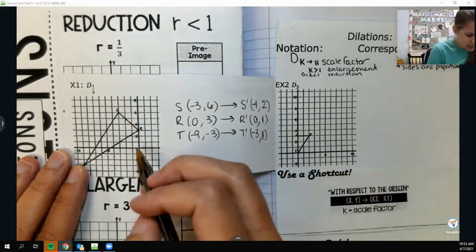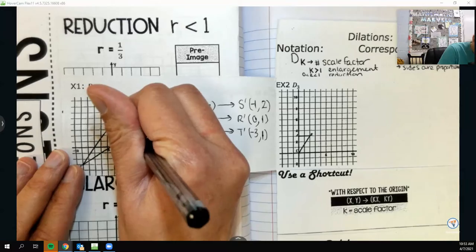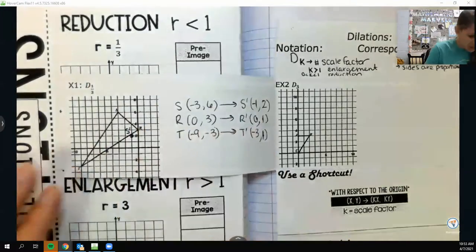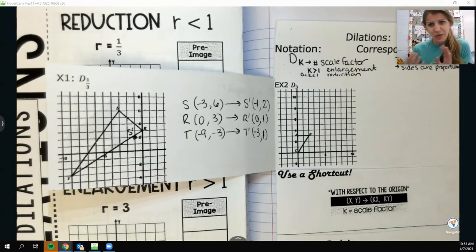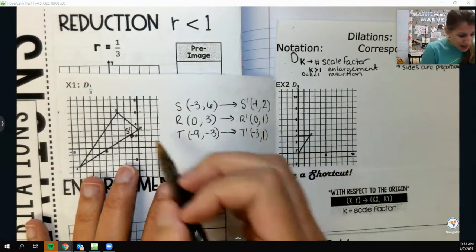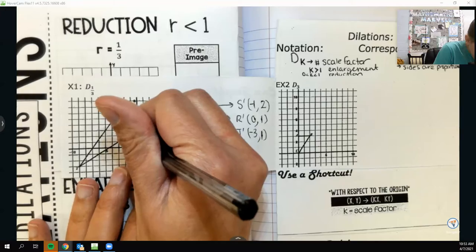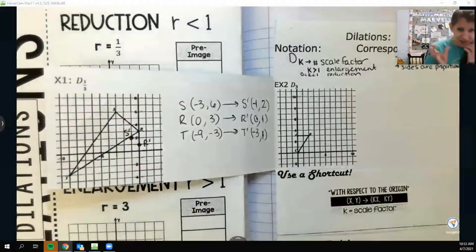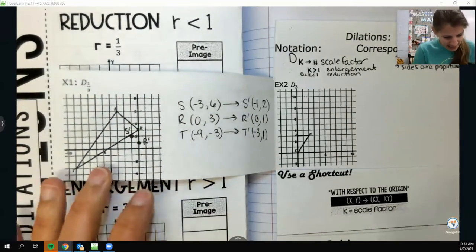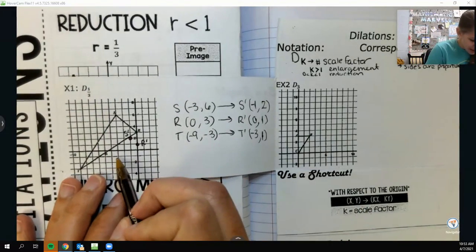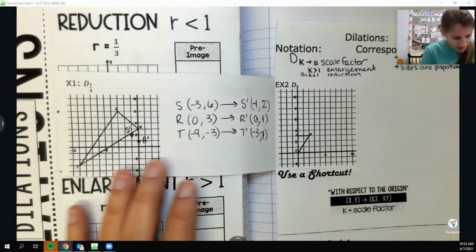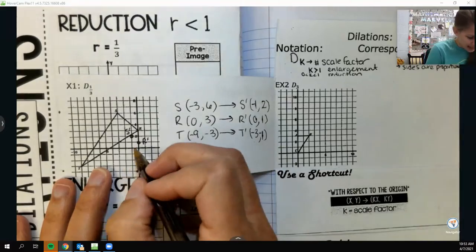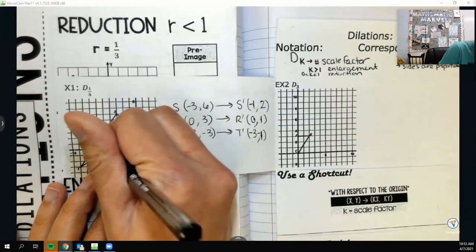And so to get my S prime, R prime, T prime, I just need to multiply all these numbers here by a third, which is actually really nice because really multiplying by 1 third is kind of like dividing by 3. And all these numbers here are divisible by 3. So that's good. So a third of negative 3 is negative 1. A third of 6 is 2. A third of 0 is still 0. A third of 3 is 1. And then a third of 9 is 3 and it's negative. And a third of 3 is 1.